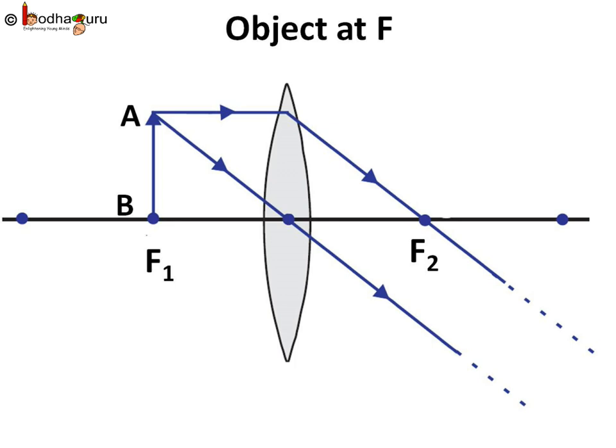If we place the object at the focal point, we actually don't get any image. As we can see here, rays wouldn't meet after refraction as they are parallel. It means if we extend them backwards, they wouldn't meet. So neither do we get a real image nor a virtual image. As we are bringing the object from infinity closer to the lens, the size of the real image formed on the other side of the lens is increasing.